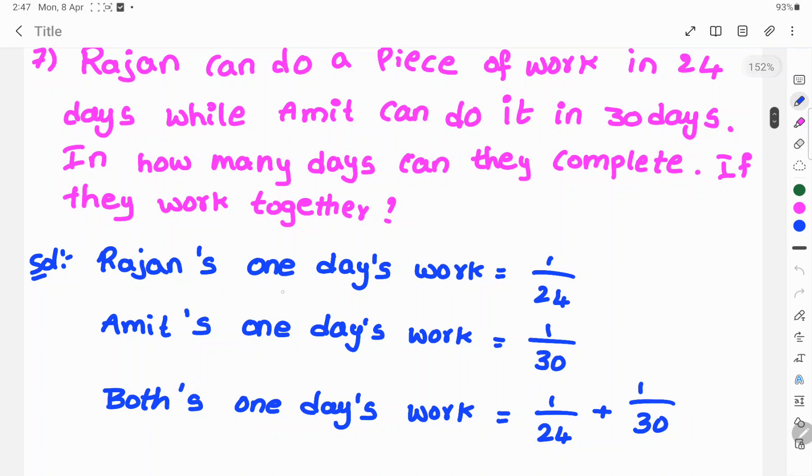Rajan's one day's work is equal to 1 by 24, and Amit's one day's work is 1 by 30, because in 30 days he completes this work. So 1 by 30. Both's one day's work is equal to 1 by 24 plus 1 by 30.